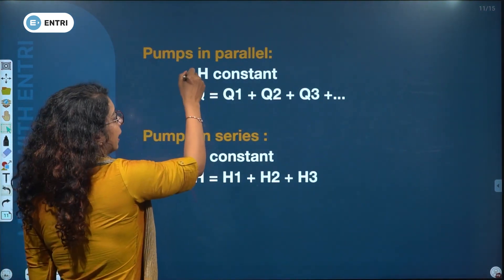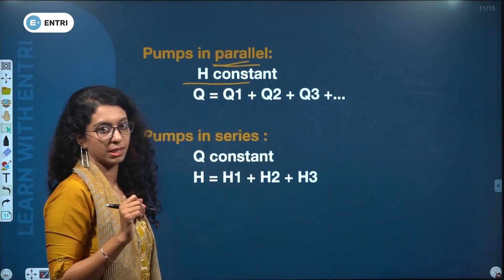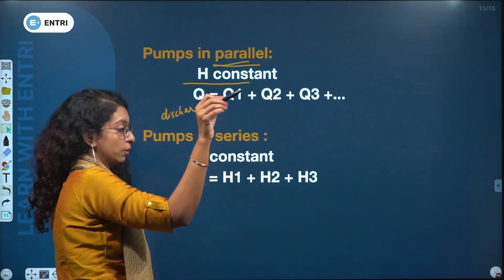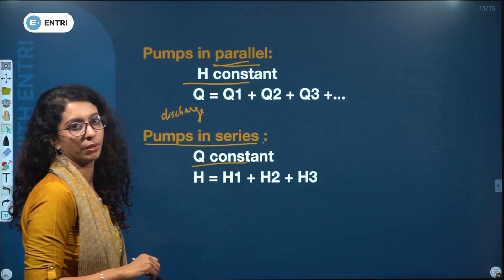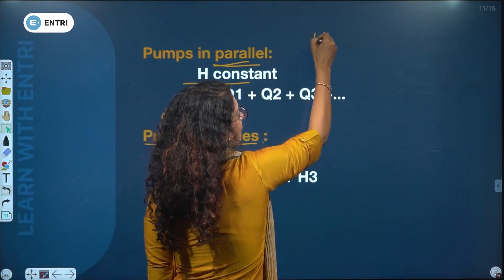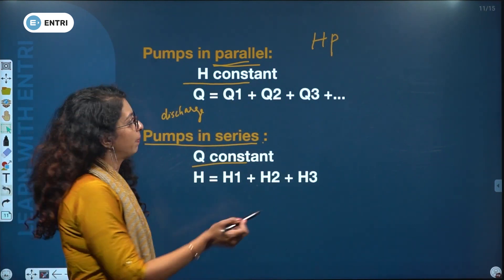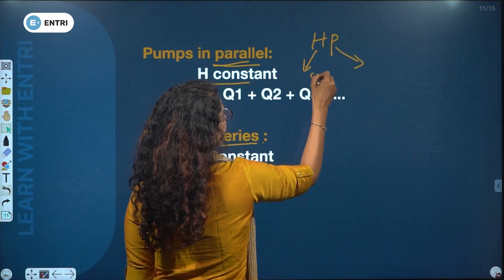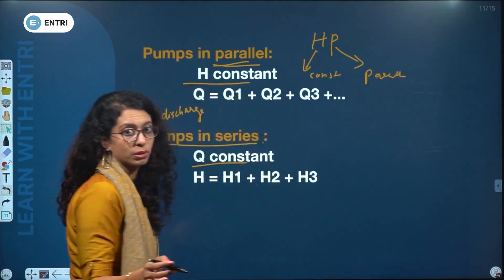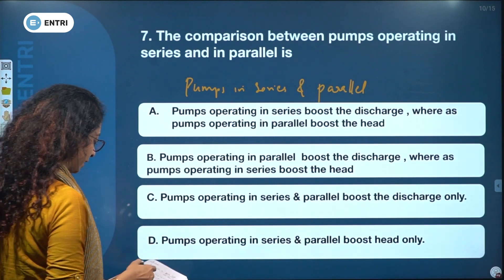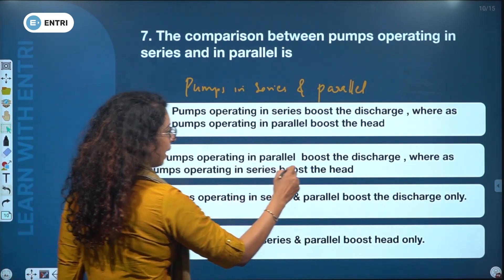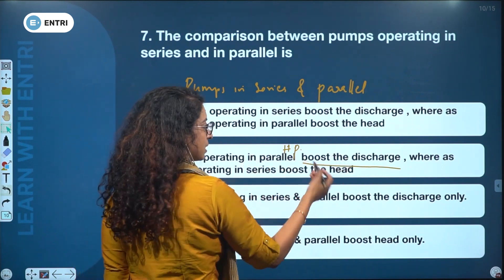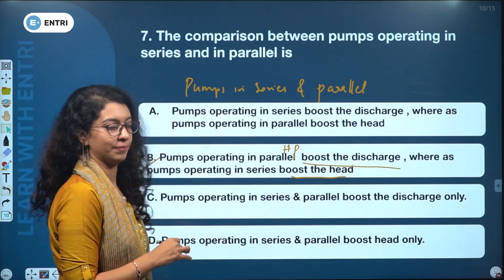For pumps in parallel, head is constant and discharge adds up: Q_total = Q1 + Q2 + Q3. For pumps in series, flow rate Q is constant but head increases. The answer is B — pumps operating in parallel boost the discharge, whereas pumps operating in series boost the head.